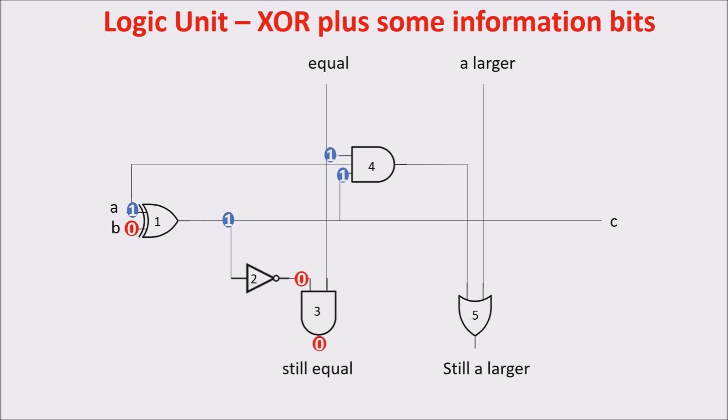So, the output of AND 4 depends on A input. In this case, A input is 1, so we have a 1 on the output of the OR to signal that A is larger than B. You can see, if A was 0 and B 1, the OR would be at 0, signaling that A is not larger than B, but it is not even equal, so B is larger than A if we get a 0 in equal line and in A larger line.